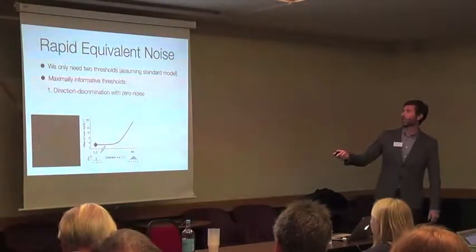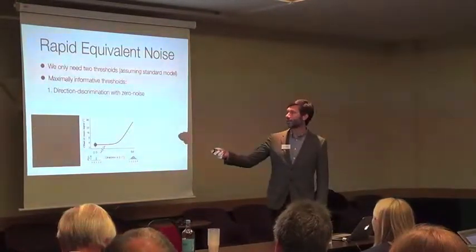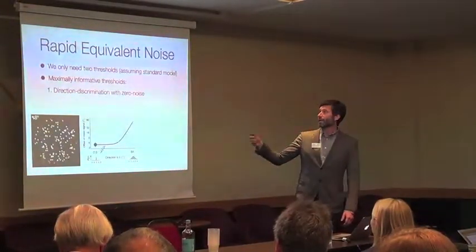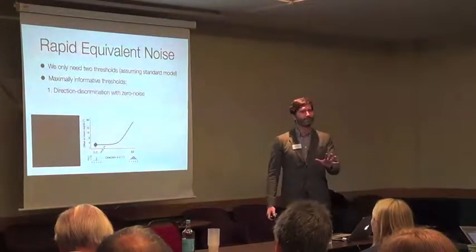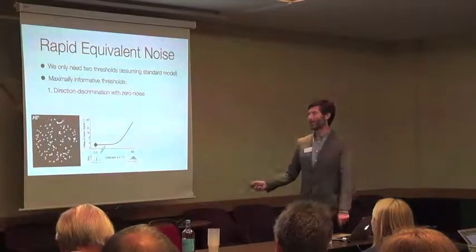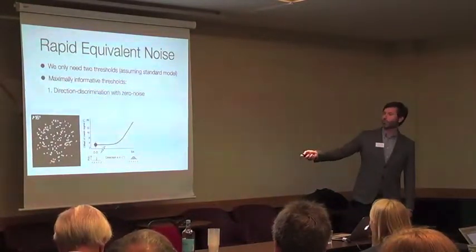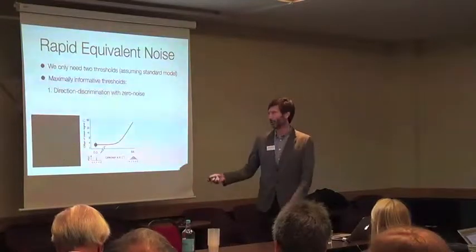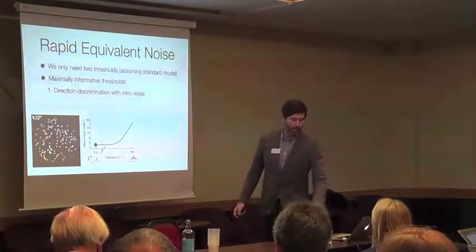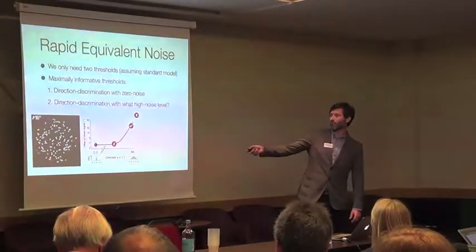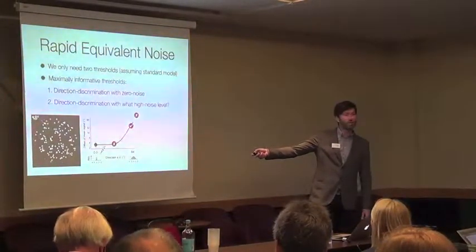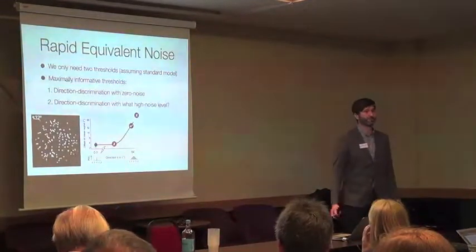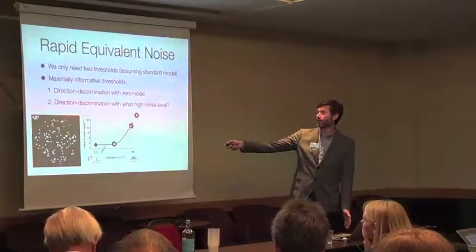Here's an idea that I think is going to be coming up in a couple of other talks today. We developed something called rapid equivalent noise. The idea here is that if you think about it, this is a two parameter fit. You have the noise here - the direction range - and their threshold. You only really need two thresholds to fit that function. One of them is easy to figure out. The point that will best constrain the function at this end will be with zero noise. That should be uncontroversial. The question is, how do you pick the other thresholds? There's lots of ways to get this wrong. If you pick too low, you won't characterize the function properly because you won't have overcome their internal or equivalent noise. If you pick too high, they can't do it. The trick is how do you pick that sweet point there?